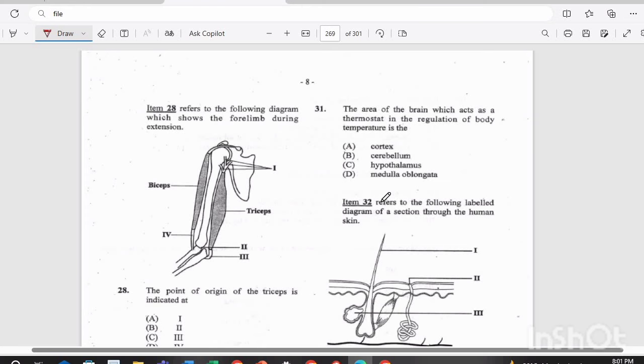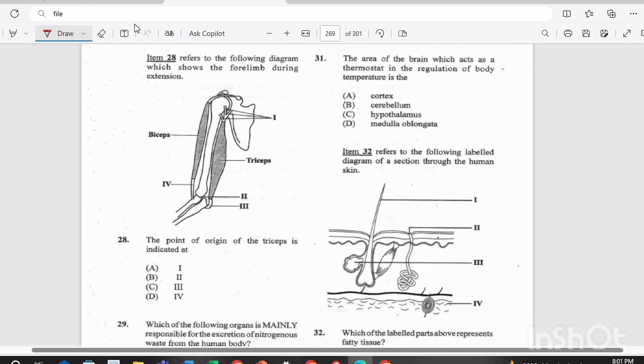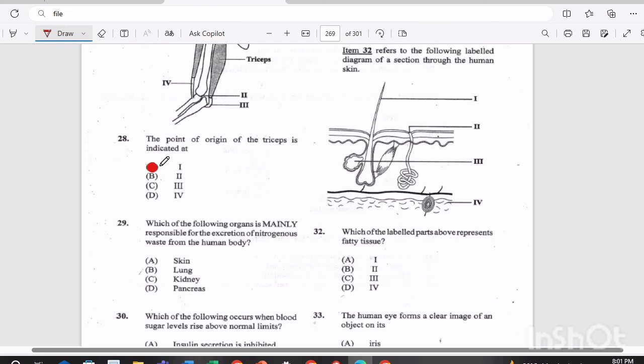Question 28. Item 28 refers to the following diagram, which shows the forelimb during extension. The point of origin of the triceps is located at, the answer there is I, which is A.